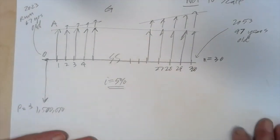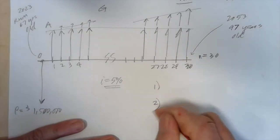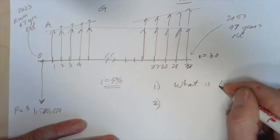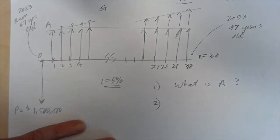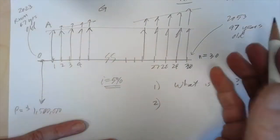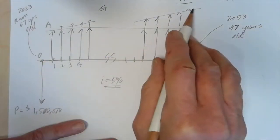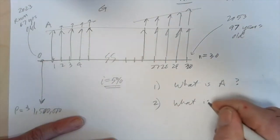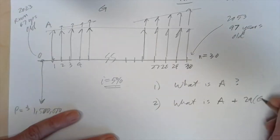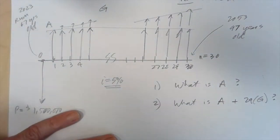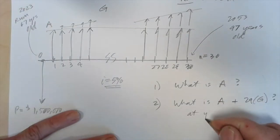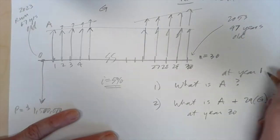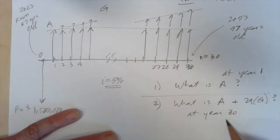So I have two questions. The first is, what is A? In other words, in my first year of retirement, how much money can I withdraw? A amount, which will be constant over the 30 years. And then the next question is, what is A plus 29 times G? This is at year 30. This is at year 1. This would be the lowest. This would be the greatest.